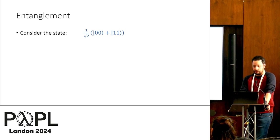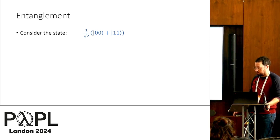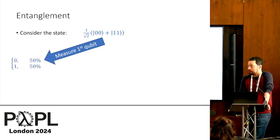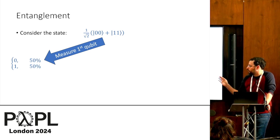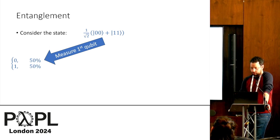So now let's talk about another very strange quantum phenomena, which is entanglement. So consider this state, where we take a superposition of 0,0 and 1,1 for two qubits. And let's say we measure the first qubit. So what are we going to get? We're going to get, with probability 50%, we're going to get zero. And with 50% probability, we're going to get one.